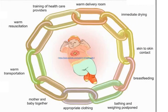The warm chain consists of 10 components that protect the newborn from external cold: warm delivery room, immediate drying, skin-to-skin contact, breastfeeding, postponement of bathing, appropriate clothing, rooming-in (mother and baby together), warm transport, warm resuscitation, and training of healthcare providers.